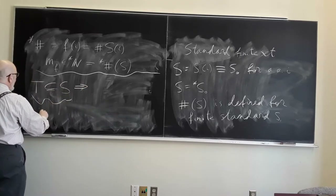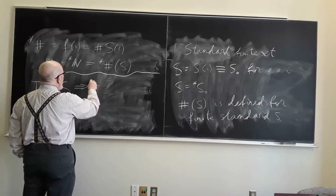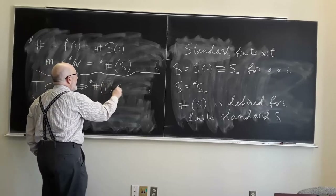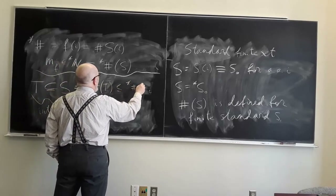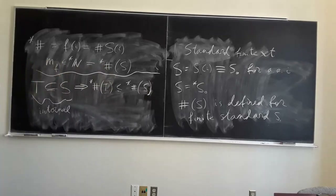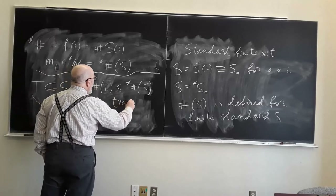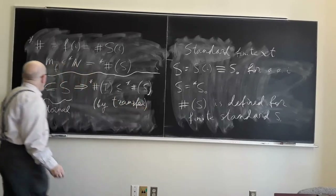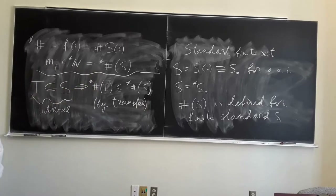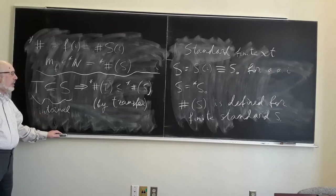It turns out there is little connection between the set-theoretic cardinality and this non-standard number, because the set-theoretic cardinality can be very high. For any infinite set S, the set is either finite or uncountable — at least the power of the continuum. On the other hand, we have this non-standard object which behaves quite well. In particular, if T is a subset of S and they are both internal, then the star-number of elements of T is less than or equal to the star-number of elements of S.